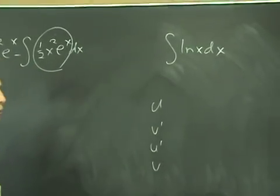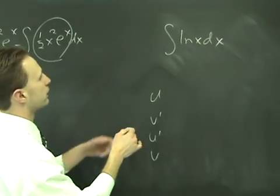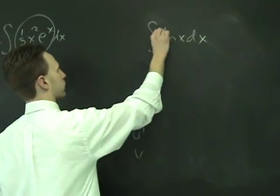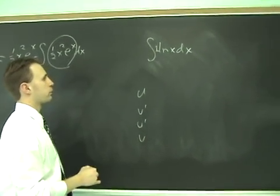And it doesn't appear to be a parts problem at first, because there's only one function in there, but what you got to do is you have to sort of insert your own phantom one hiding in there. You can just pretend that there is a one there, and then carry out parts that way.